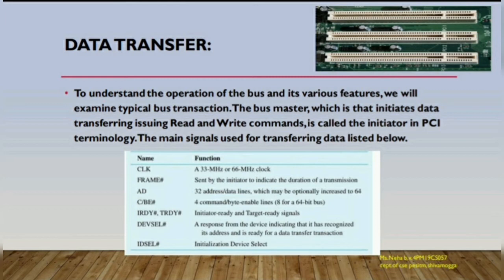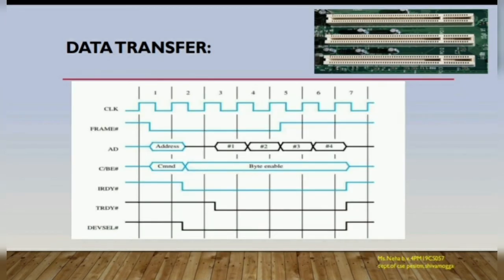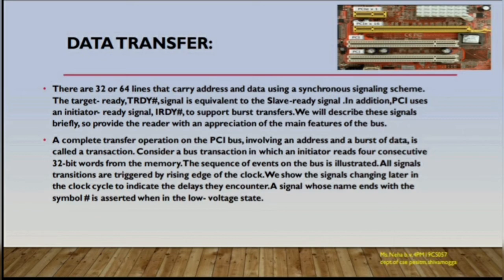The main signals include CLK, FRAME, and AD. There are 32 or 64 lines that carry address and data using a synchronous signaling scheme. The Target Ready (TRDY) signal is equivalent to the slave-ready signal. PCI also uses an Initiator Ready (IRDY) signal to support posted transfers. A complete transfer operation on the PCI bus involving an address and a burst of data is called a transaction.